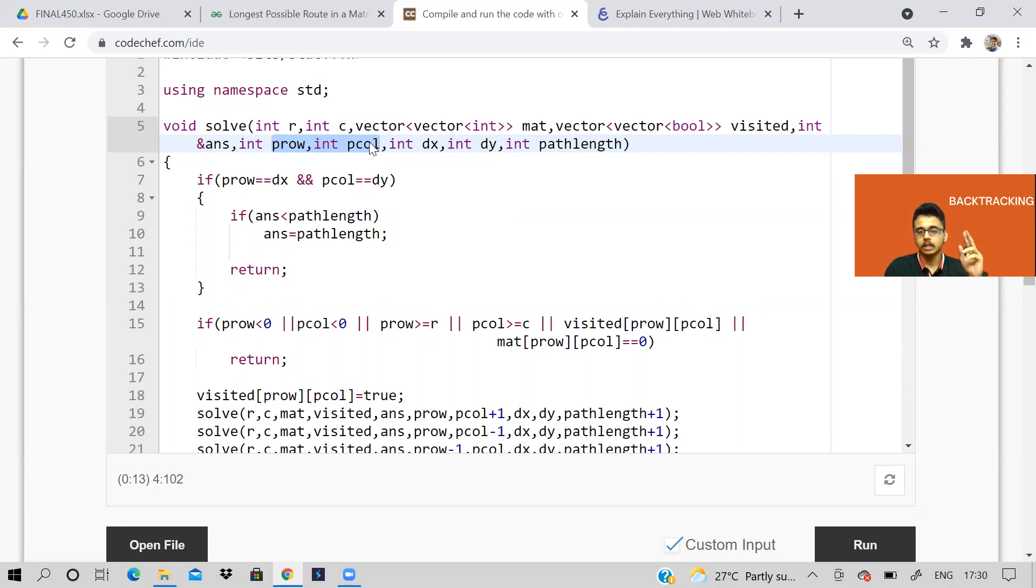So when we are recursively calling the function again and again, these two variables only will change. And of course, the path length will increase by one, because it means that we are visiting the next cell, either we are going right, left, up or down. So if we have reached our destination, we check like this, if our current row and current column. CP over here is for path, I've made a short form P row means current path, where am I in the matrix, which row, which column. If we have reached destination, then check if we have found a longer path length, if we have found a longer path length, then record that in the answer and return.